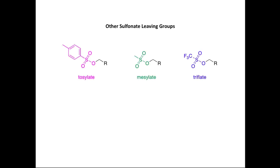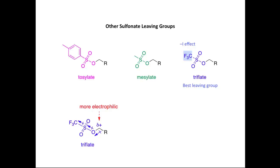The mesylate group is one of a family of sulfonate leaving groups. Two others are the tosylate, to the left of the mesylate, and the triflate, to the right. The only difference between these groups is the substituent linked to sulfur: methyl versus an aromatic group versus a trifluoromethyl group. These have different leaving group abilities — the triflate is the best leaving group of this series.